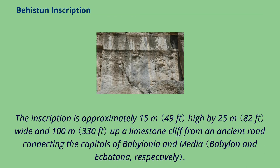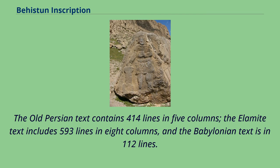The inscription is approximately 15 meters high by 25 meters wide and 100 meters up a limestone cliff from an ancient road connecting the capitals of Babylonia and Media. The Old Persian text contains 414 lines in 5 columns, the Elamite text includes 593 lines in 8 columns, and the Babylonian text is in 112 lines.